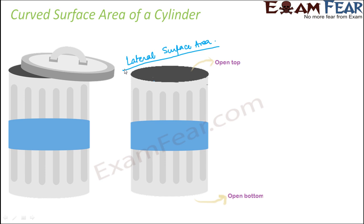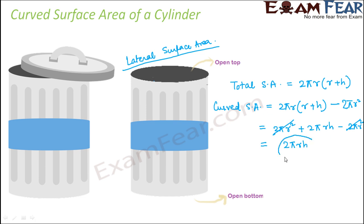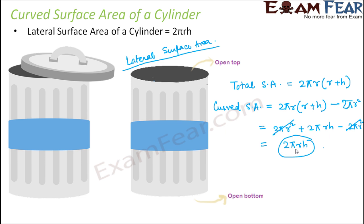How do we find out the curved surface area of a cylinder? That's pretty simple. We had calculated the total surface area, which was 2πr(r + h). To find the curved surface area, you subtract the area of the top and bottom surfaces from the total. The area of the top surface is πr², and the bottom is also πr², so together they are 2πr². Subtracting 2πr² from the total, the 2πr² terms cancel out and you are left with 2πrh. So the curved surface area (or lateral surface area) of a cylinder is equal to 2πrh.